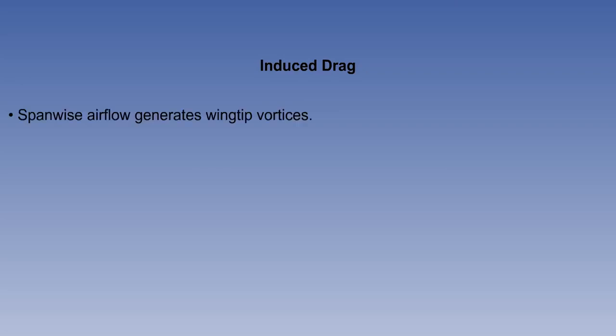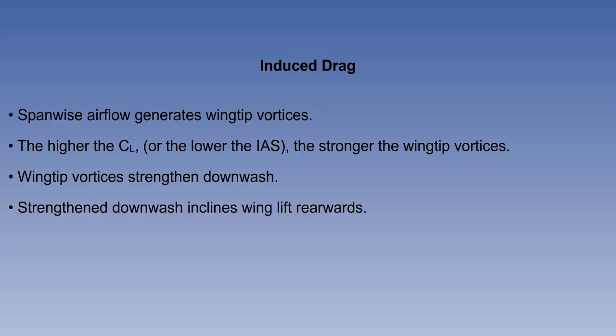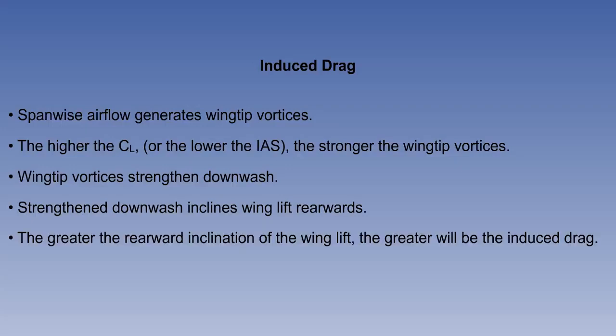On induced drag, you will need to remember the following key points. Span-wise air flow generates wingtip vortices. The higher the CL, or the lower the IAS, the stronger the wingtip vortices. Wingtip vortices strengthen downwash. Strengthened downwash inclines wing lift rearwards. The greater the rearward inclination of the wing lift, the greater will be the induced drag.